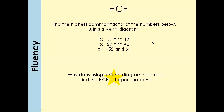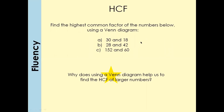Now there are a few more questions for you to do. You can pause the screen, give them a go, and I'm going to mark them in a minute. The answers: for 30 and 18 it's going to be 2 × 3 = 6. For 28 and 42, the answer is going to be 14. And for 152 and 60, the answer is going to be 4.